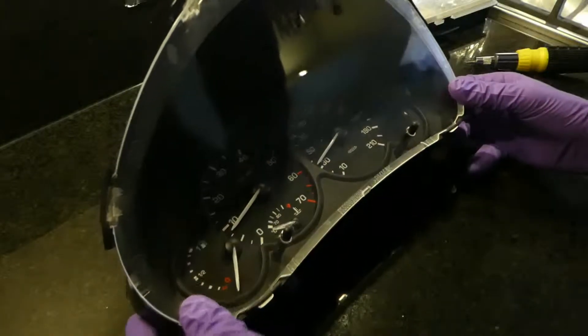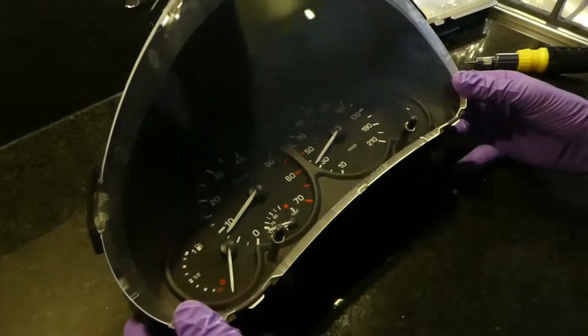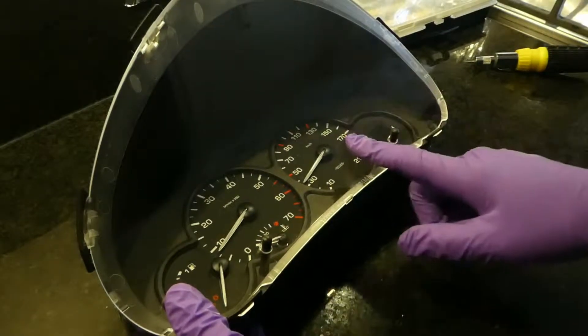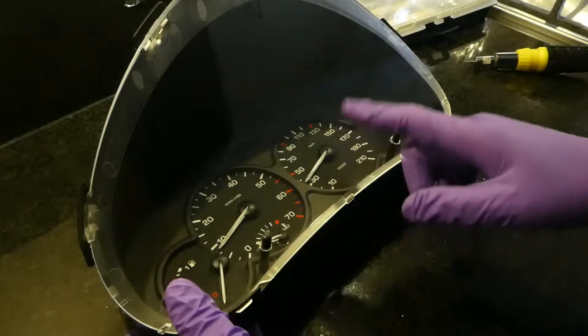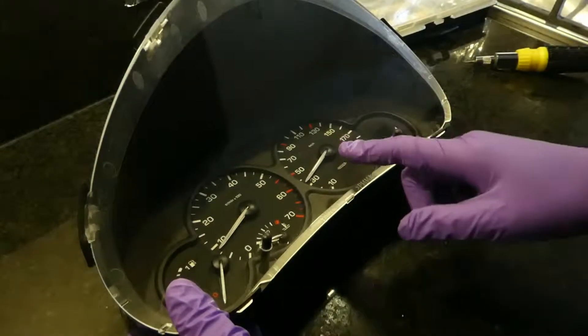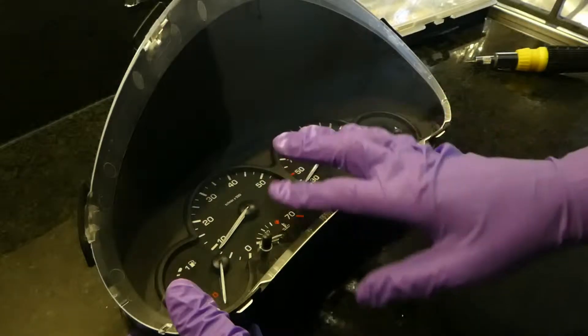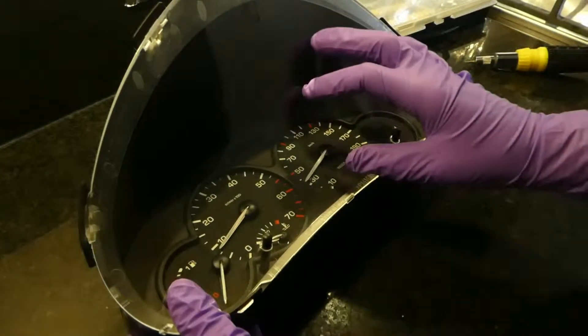I have the instrument panel out of the car, so the next part is to dismantle the instrument cluster to take out the overlay. This allows you to scan it and print your own custom design for the speedometer.